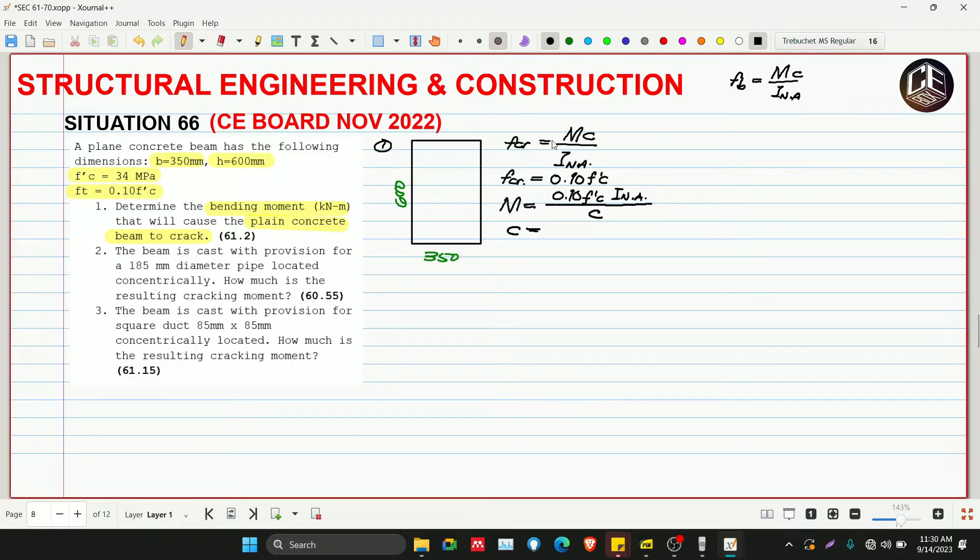M is equivalent to point 10 of F prime C multiplied by moment of inertia over C. The C - the neutral axis is at the center, so C is half of 600, that is 300 millimeters. Since our section is rectangular, the INA is BH cubed over 12: base 350, H 600 cubed over 12.